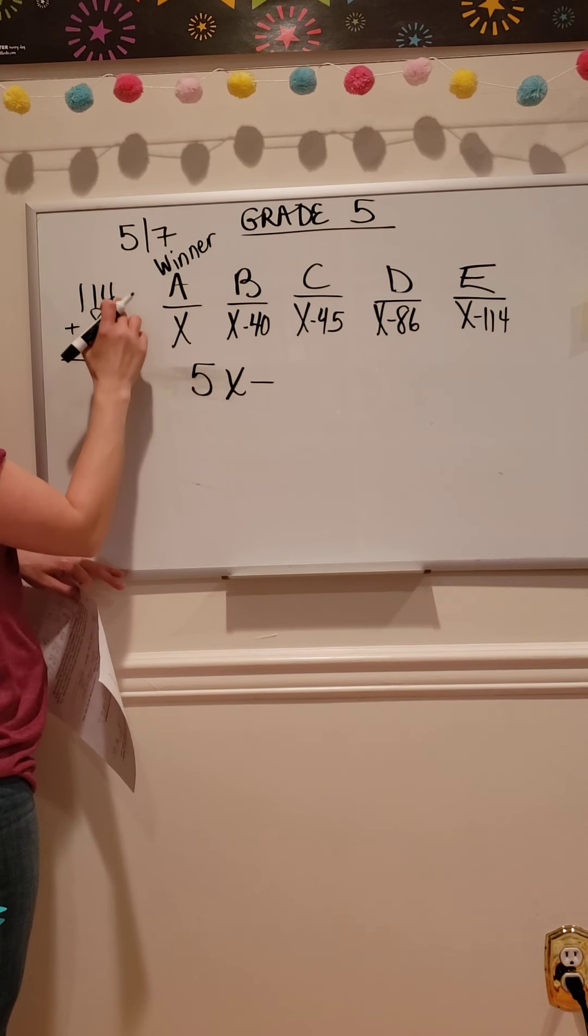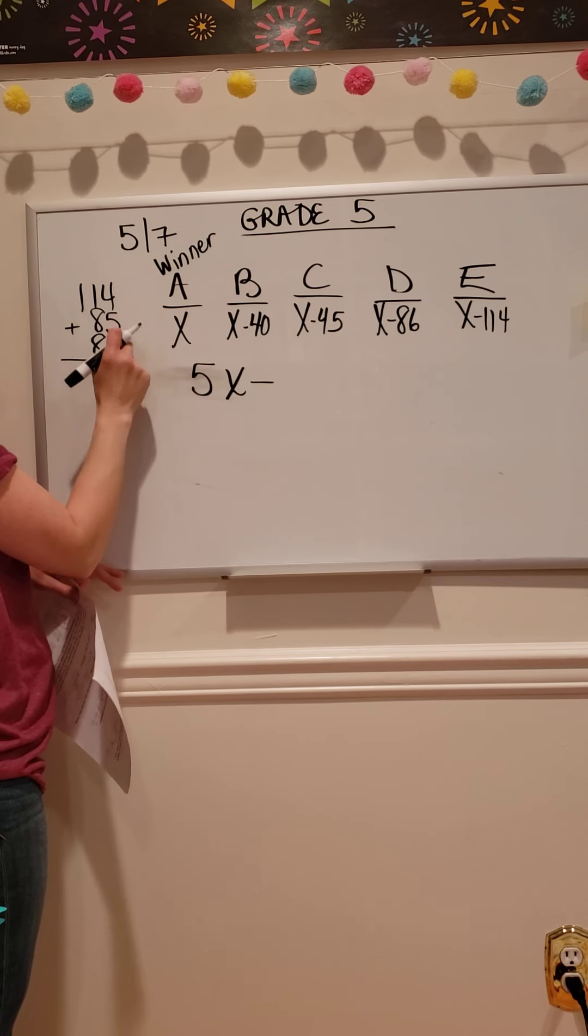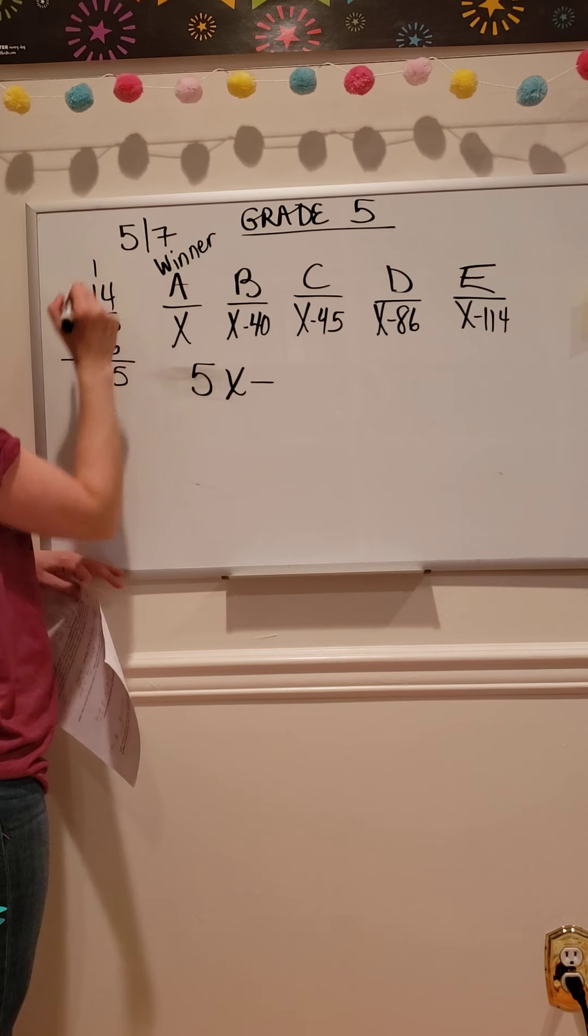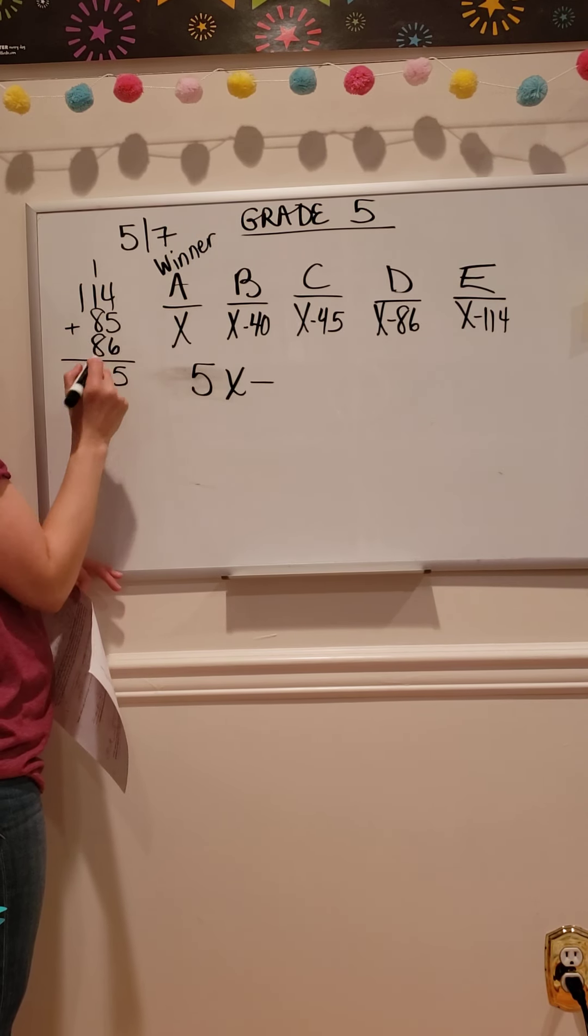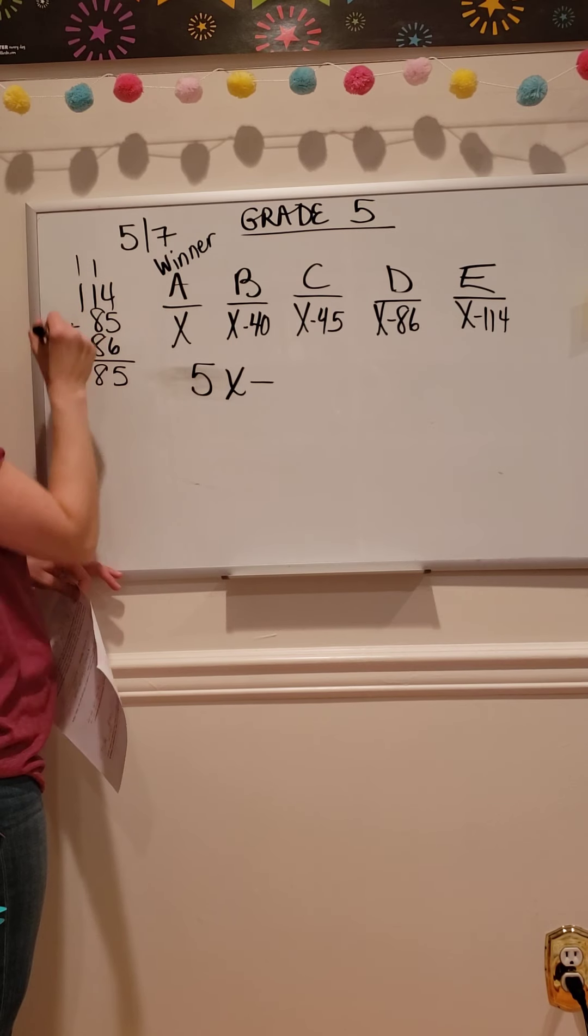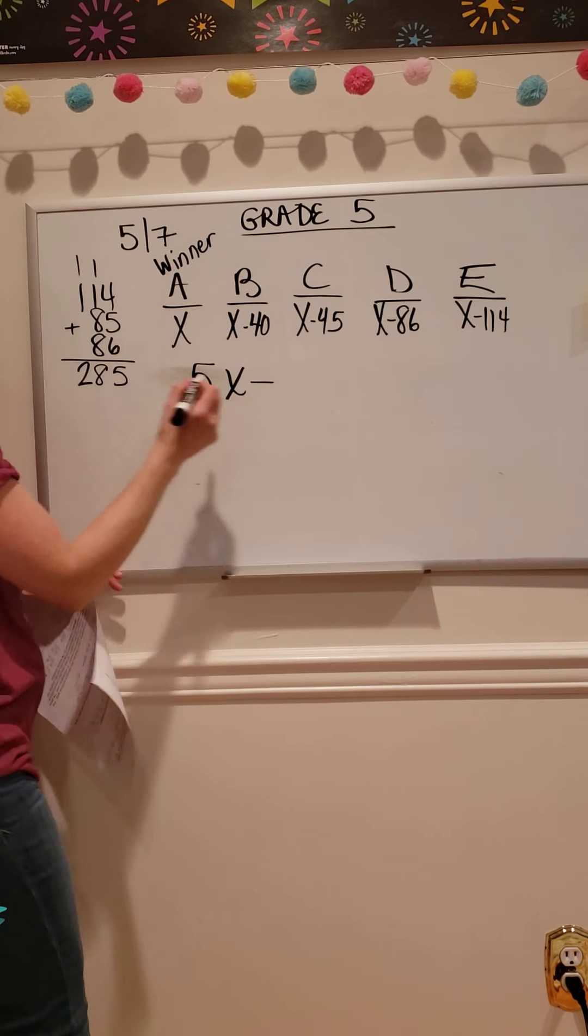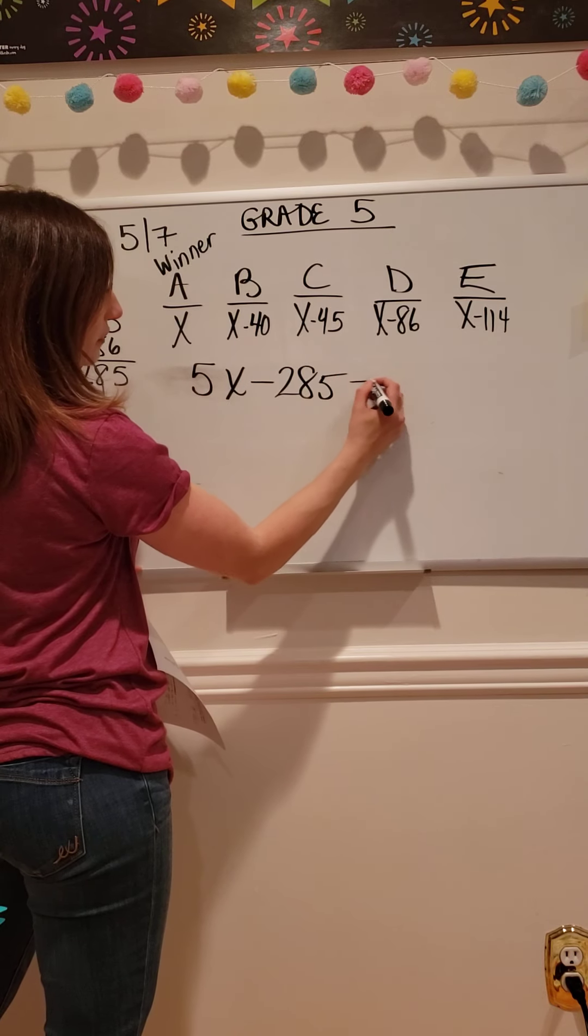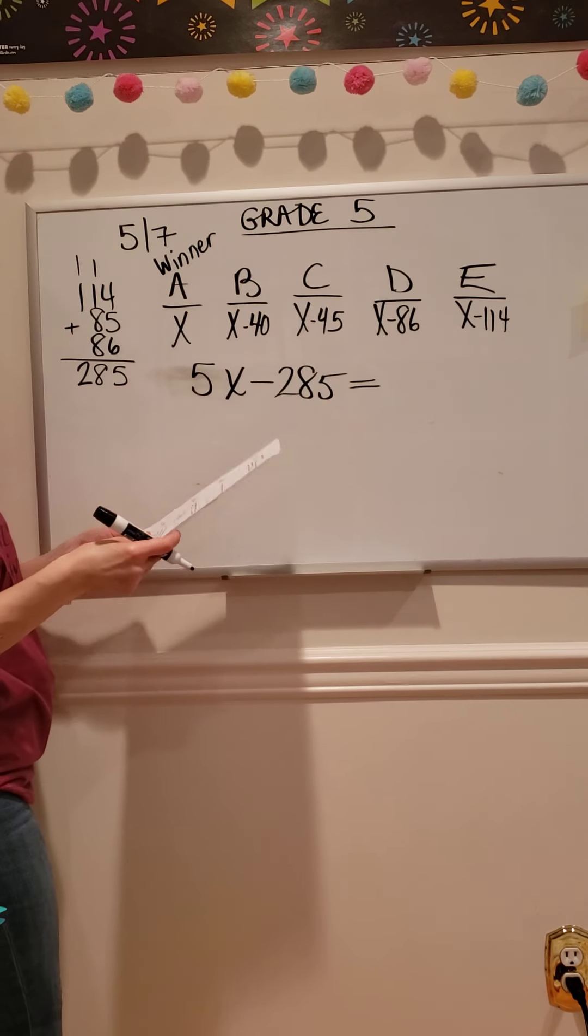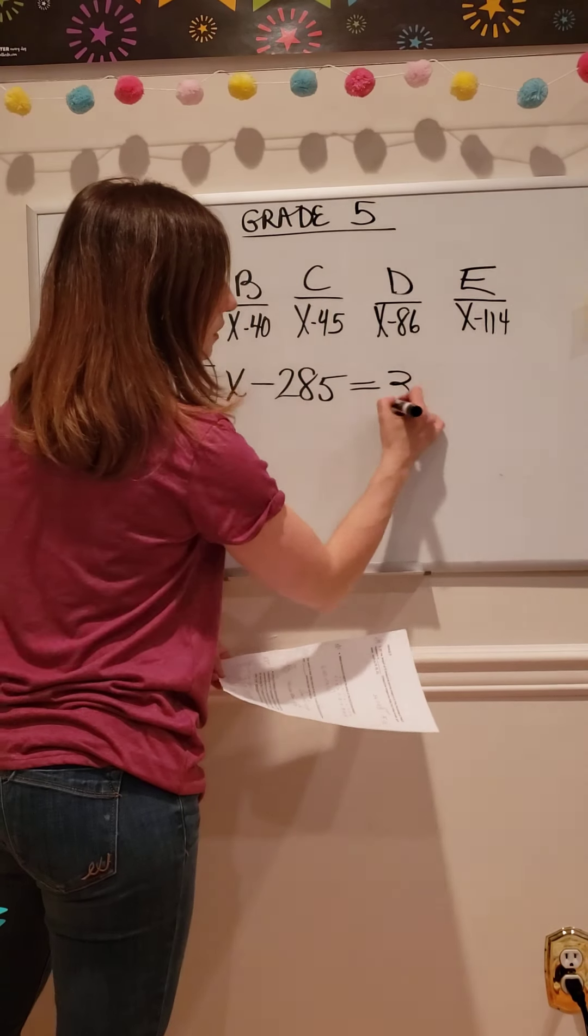Now I'm going to add it all up. 4 plus 5 is 9, 9 plus 6 is 15, carry the 1. 1 plus 1 is 2, 2 plus 8 is 10, 10 plus 8 is 18, carry the 1. 1 plus 1 is 2. So 5X take away 285 is going to give me my total number of students that voted.